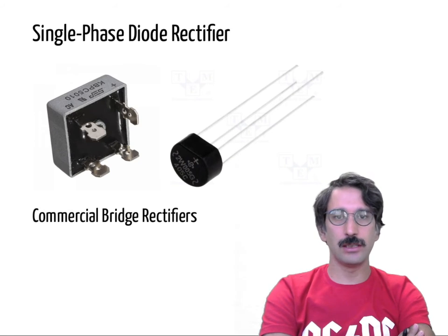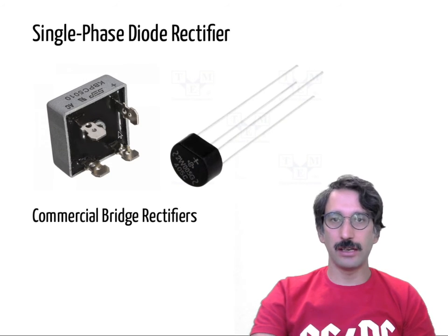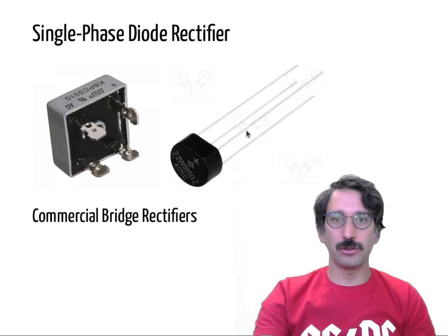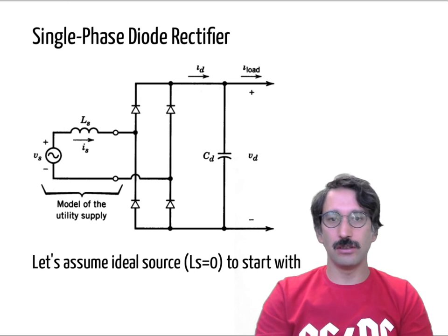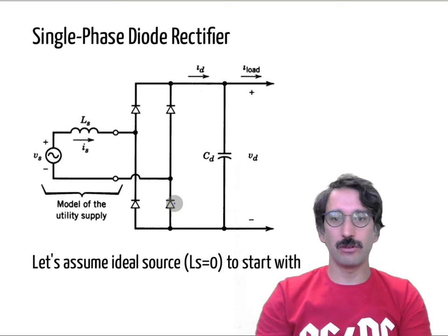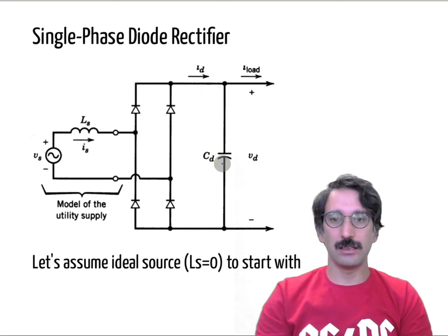Today we will talk about single-phase diode rectifiers. You may have seen commercial rectifiers, also called bridge rectifiers, which usually have four terminals — two for the input and two for the output. We can draw the equivalent circuit of a single-phase diode rectifier with four diodes. The input voltage has some inductance due to cable length, but we can ignore it for now. At the output, a low-pass filter like a capacitor or LC filter is used, and this is where the load is connected.